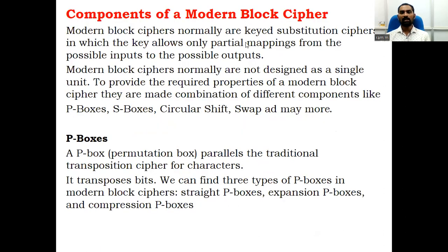Modern block ciphers are normally key substitution ciphers in which the key allows only partial mappings on the possible inputs to the possible outputs. They are not designed as a single unit — they are made as a combination of different components, like P-boxes (Permutation boxes), S-boxes (Substitution boxes), Circular Shifts, XOR operations, Split and Join operations. Like that, we have many operations.